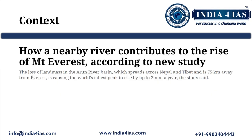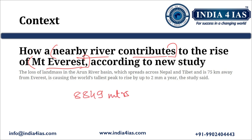Recently, a research article was published which cites that a nearby river is contributing to the rise of Mount Everest. Mount Everest is currently 8,849 meters tall above mean sea level. In the last 89,000 years, Mount Everest has risen about 15 to 50 meters in height. This is because a nearby river is eroding rock and soil at the base of Mount Everest.